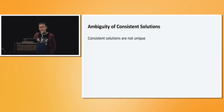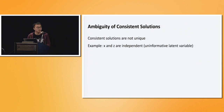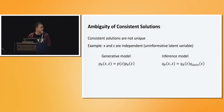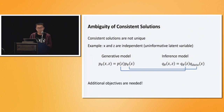However, if we only match the marginals, that is not really enough. We have provided two marginal distributions as input, but we are asking the model to learn a joint distribution, and there are multiple different joint distributions that can correspond to the same marginals. So consistent solutions are not unique. In particular, there is a pretty bad consistent solution — one where x and z are actually independent. Our generative model just models x no matter what z is, and our inference model just models z no matter what x is. This obviously is not the kind of model we want, because the whole point of latent variable modeling is for the latent variable to capture some information about the input. So we need some additional objectives.